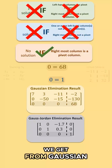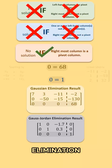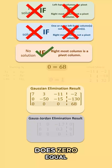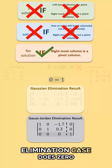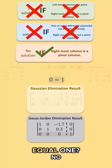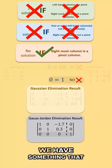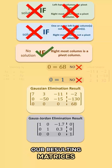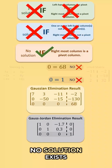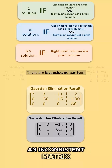Consider the result we get from Gaussian elimination. Does 0 equal 68? Well, no. For the Gauss-Jordan elimination case, does 0 equal 1? No. Basically, we have something that is not true within our resulting matrices, making it so that no solution exists. We call this an inconsistent matrix.